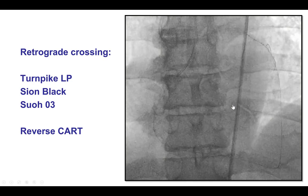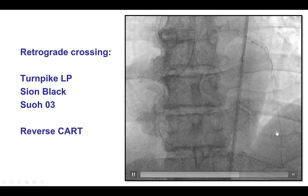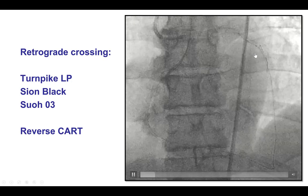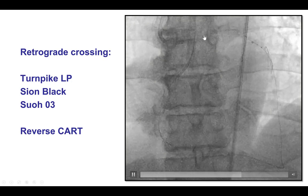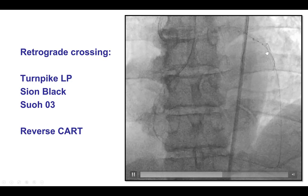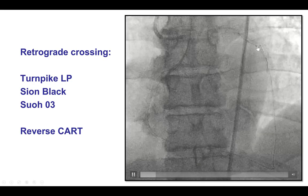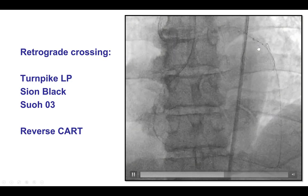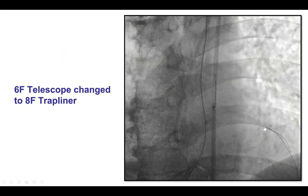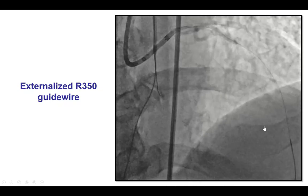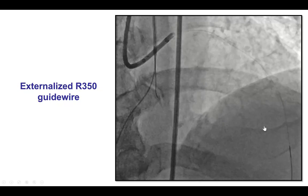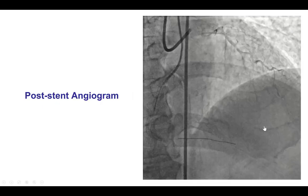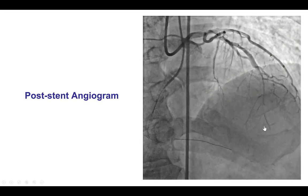As a result, we switched to retrograde crossing through a septal collateral from the right coronary artery, and then we were able to perform the reverse CART technique. We had a guide extension into the LAD to facilitate retrograde crossing, and then we were able to inflate a balloon and advance the retrograde guide wire into the antegrade guide extension. The patient did well during the retrograde approach. We did not have to use hemodynamic support. We eventually were able to externalize an RG3 guide wire and pre-dilated the LAD, then performed stenting.